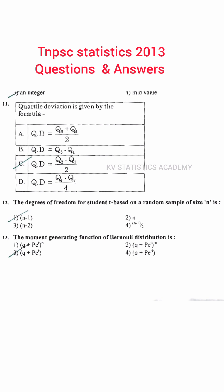The degrees of freedom for student t-test based on a random sample of size N is N minus 1.